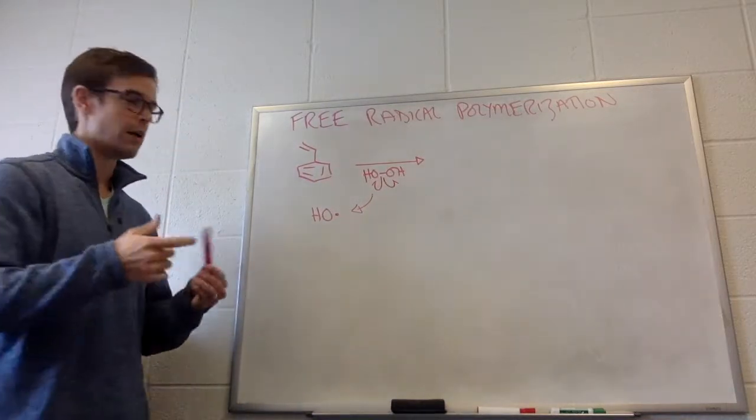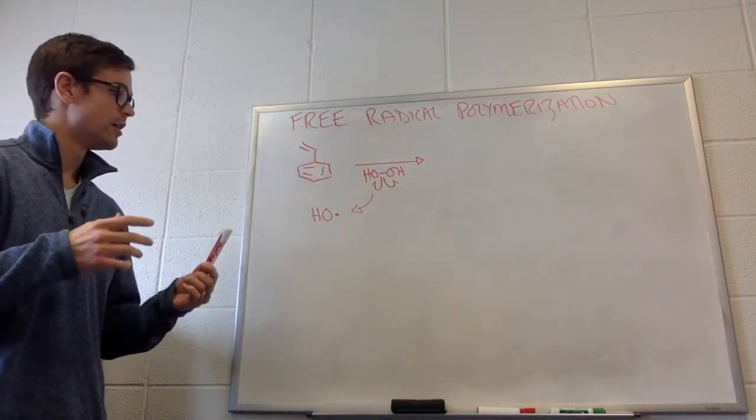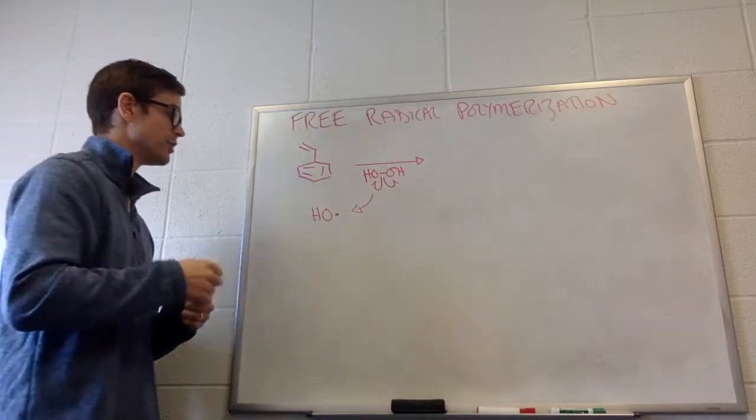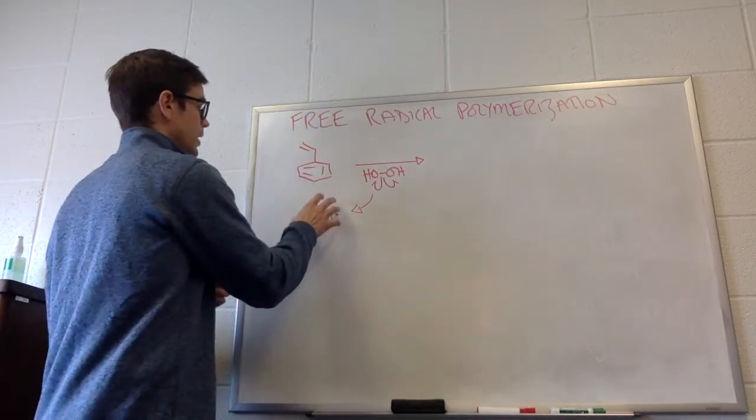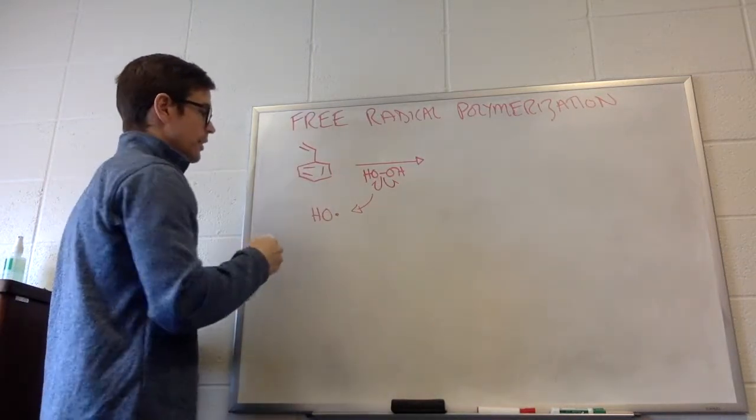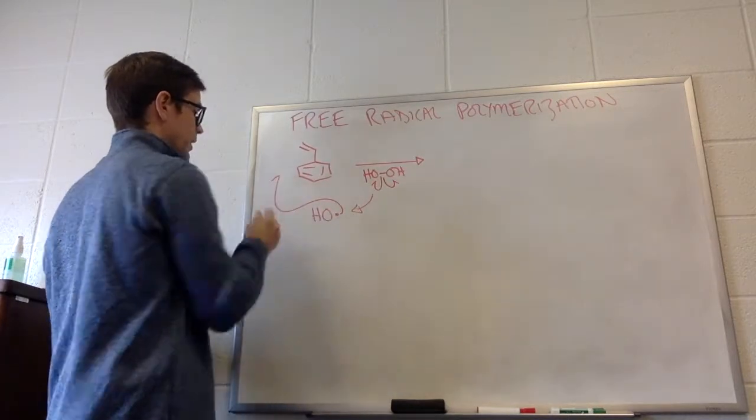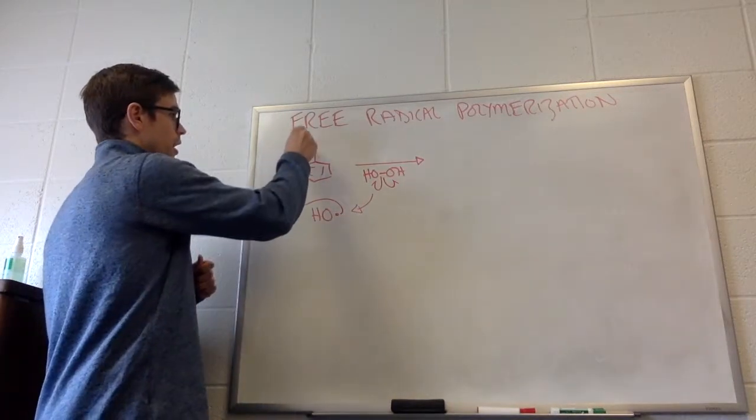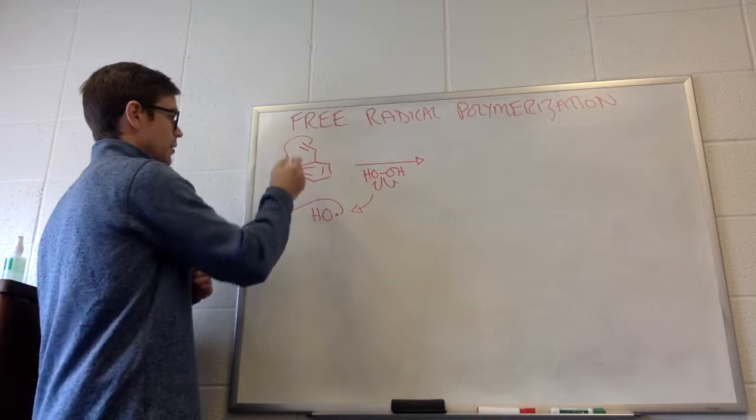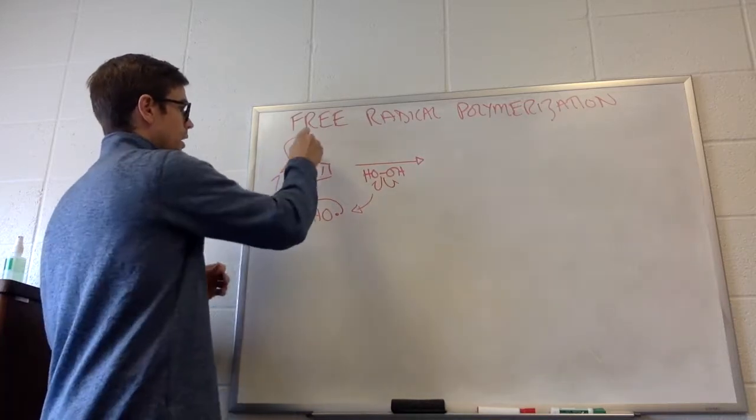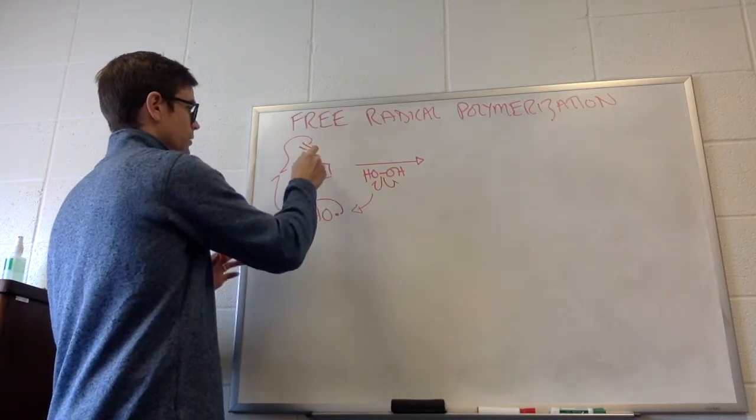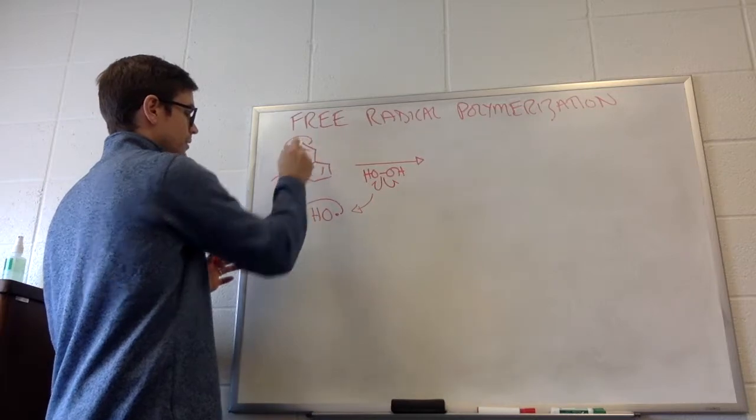Just like the last reaction that we learned, this is now going to react with the alkene. So it's going to bring its one electron up there. This alkene is going to react with that. And essentially, again, we have the opportunity for us to create a radical on this side or this side.